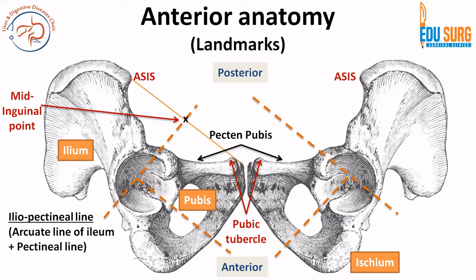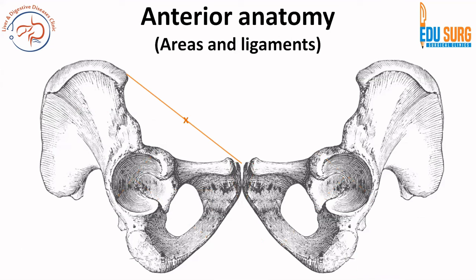We will clear that first so that it is not confusing in the upcoming video. The mid-inguinal point is the midpoint of the inguinal region. The way to remember is that the word 'inguinal ligament' is not there, so your line is not the inguinal ligament — this is the mid-inguinal point. The importance of it is that you can palpate the femoral arterial pulsation beneath this area.